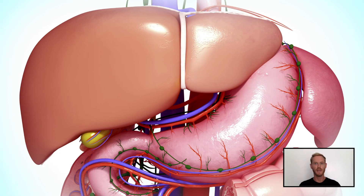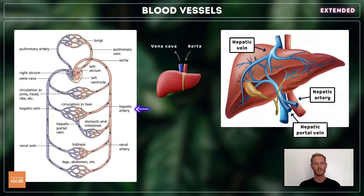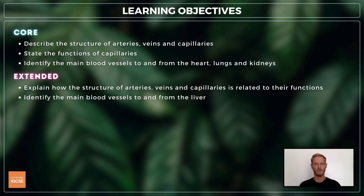You need to identify the main blood vessels to and from the liver. Blood flows into the liver through two vessels: the hepatic artery carries oxygenated blood from the aorta, while the hepatic portal vein delivers blood rich in nutrient molecules from the stomach and small intestines. The hepatic vein then returns deoxygenated blood from the liver to the vena cava.